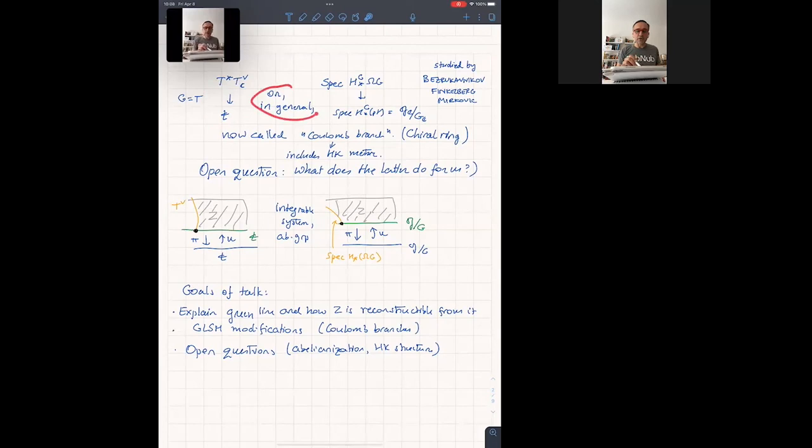In general, the space was studied perhaps in a different context of Finkelberg and Mirkovic. It's probably more than 15 years since then. And they discovered that the correct formulation of a total system, which had been implicit somehow in the literature before, but again, not quite spelled out, I think, until they wrote it up, is a spec of the equivariant homology of the based loop group of G.